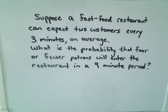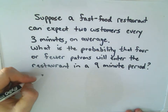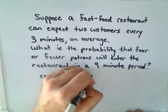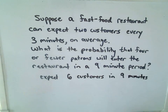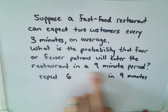In this problem, suppose we have a fast-food restaurant and they can expect two customers every three minutes on average. We want to know the probability that four or fewer patrons enter the restaurant in a nine-minute period. Intuitively this should be a little lower than 50%, because if you're getting two customers every three minutes, you can expect six customers in nine minutes, and that value six will be our lambda.